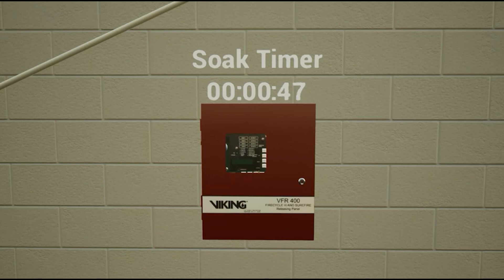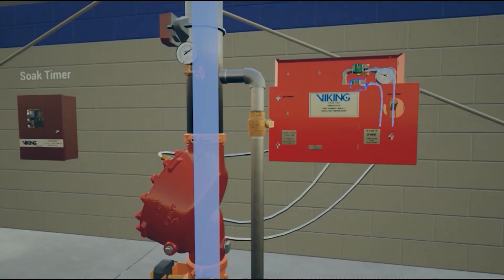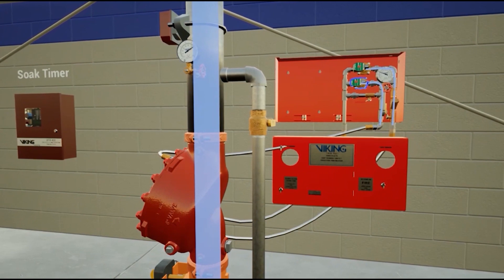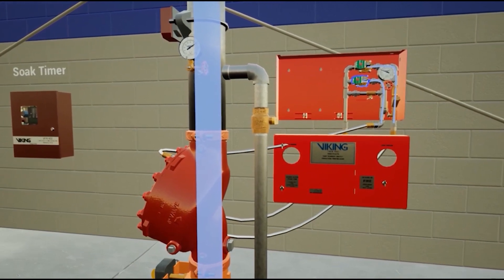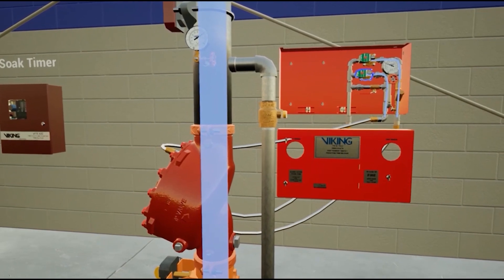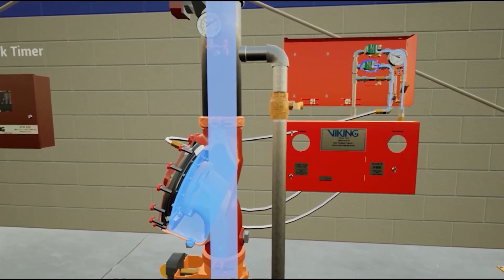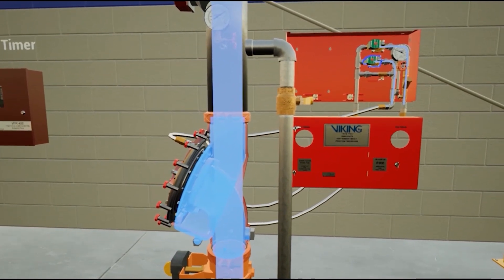Upon the expiration of the soak timer, the power is removed from the normally closed solenoid valve, allowing it to close. With the normally closed solenoid valve returned to its normal state, the water pressure will begin to re-establish in the priming chamber.